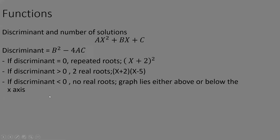The discriminant is defined as b squared minus 4ac, where b is the coefficient of x, a is the coefficient of x squared, and c is the constant. If the discriminant equals zero, there are repeated roots — the graph intercepts the x-axis at exactly one point.